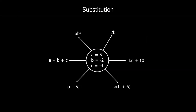And to finish up, we have one final set of questions. So a is 5, b is negative 2, and c is negative 4. We're substituting 5 in for a, negative 2 in for b, and negative 4 in for c in these six expressions. Give them a go.